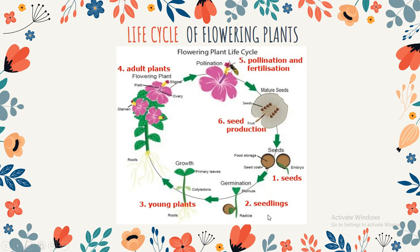Stage two: Seedling. We can think of the seedling as the second stage in the life cycle of the flowering plants. The first seeds and the first roots start to grow.